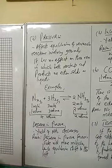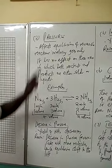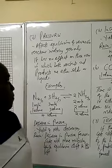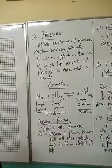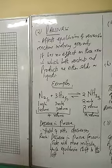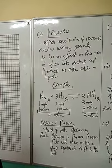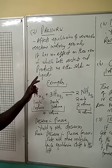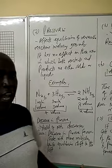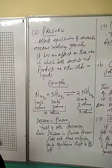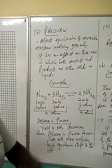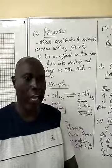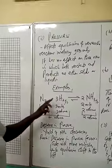The first factor is pressure. We found that pressure affects the equilibrium of reversible reactions involving gases only. Pressure has no effect on those reactions in which both reactants and products are either in solid or in liquid. This is because solids and liquids cannot be compressed or expanded, so they don't exhibit any big change. But gases can be compressed and can also be expanded. So let us look at one example.